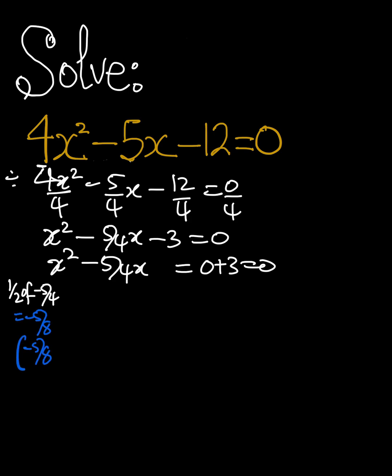Then when we square it, we get negative 5 over 8 squared. And we're going to add it to both sides.